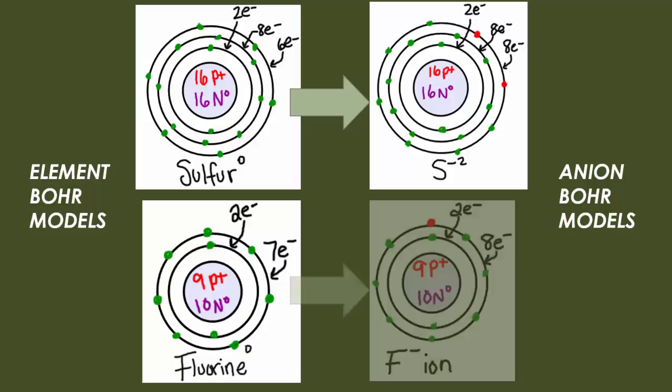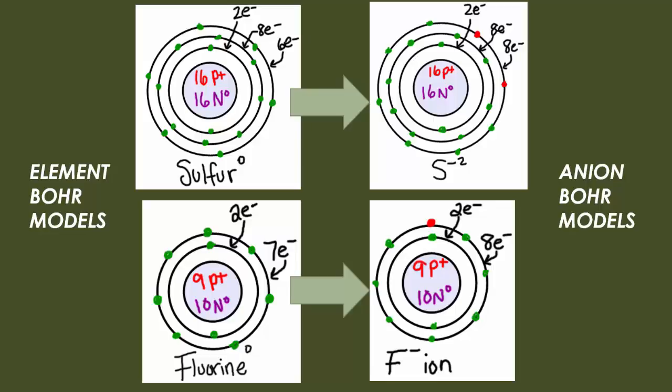Same thing for fluorine. Fluorine has a negative 1 charge, so it goes from 7 electrons in its outermost principal energy level to 8 electrons. Now these cannot exceed the number of electrons that can possibly be held in that energy level.